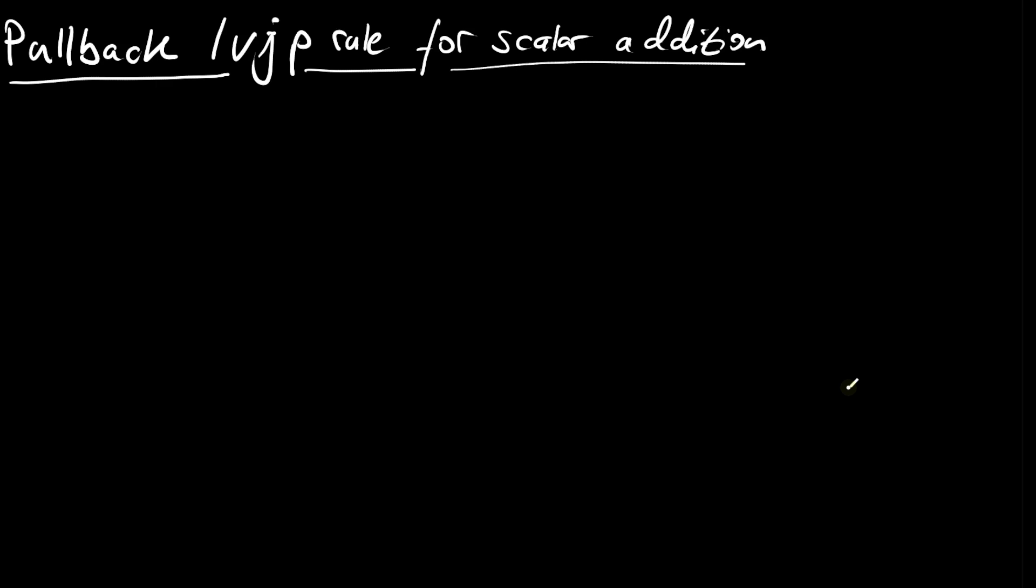In this video we're going to derive the pullback or vector Jacobian product rule for scalar addition. Scalar addition can be seen as a function that takes two arguments x and y and maps them to x plus y, and let's call that result z.